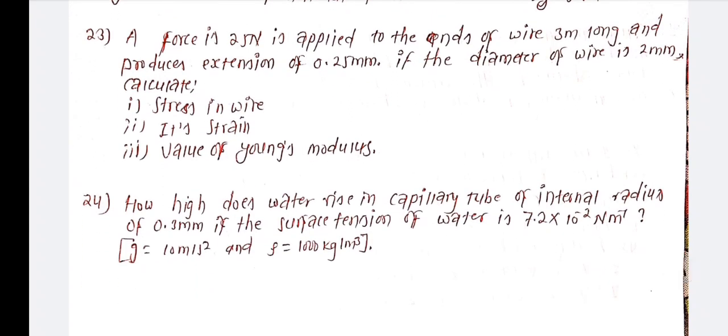How does water rise in a capillary tube? When a capillary tube of radius 0.13 mm is used, the surface tension of water is 10.2 into 10 to the minus 2 Newton per meter, g equals 10 meters per second squared, and density of water is 1000 kg per cubic meter.